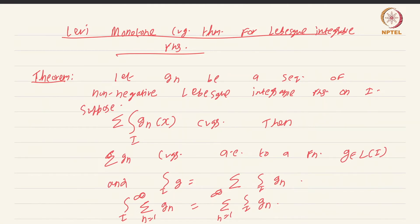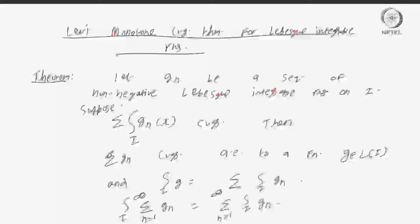Once we prove the dominated convergence theorem in the next video, we are going to see several applications of both this monotone convergence theorem as well as the dominated convergence theorem. In particular, if you recall from real analysis one, we had studied something about uniform convergence and something that is not true for pointwise convergence. We are going to see that in more depth in the applications.